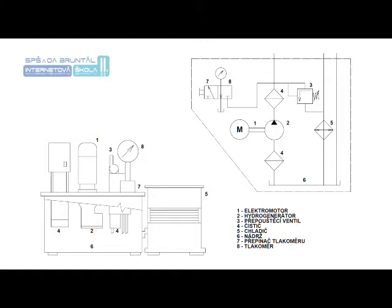Druhy kapalin, které se používají v hydraulických obvodech, jsou minerální oleje, syntetické oleje, dále pak nehořlavé kapaliny a ekologické kapaliny.